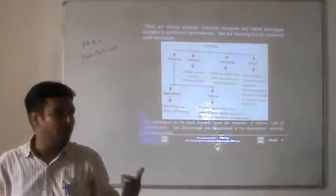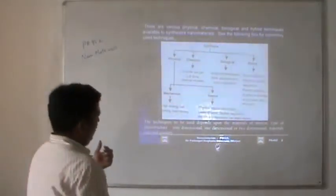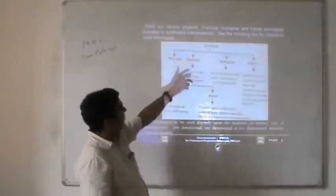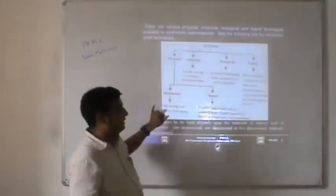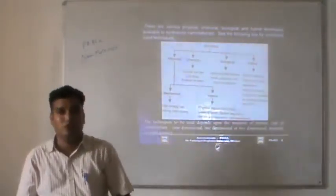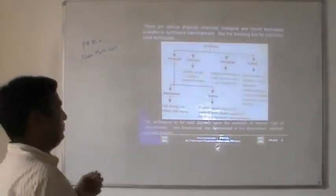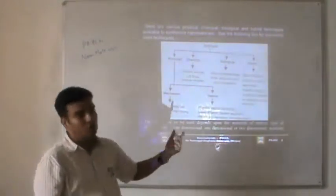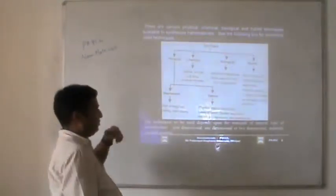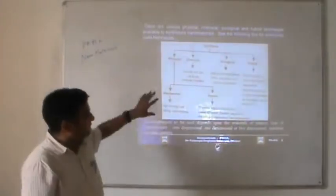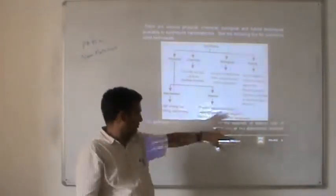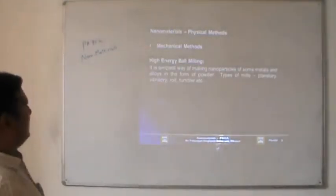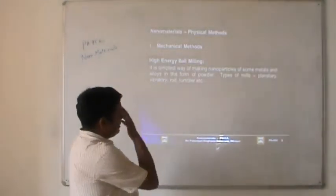The most important consideration is what type of nanomaterial we want — whether it is 0D, 1D, 2D, or 3D nanostructures. First we choose the type of synthesis method, second is the material size — whether 1 to 10 nanometers, 50 nanometers, or 50 to 100 nanometers — and third is the quantity, whether in bulk or just for laboratory purposes. Depending on all these requirements, we choose the technique.